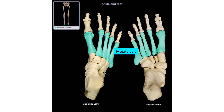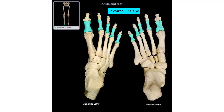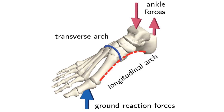The metatarsals are long bones with no special features, similar to the metacarpals of the hand. There are proximal, middle, and distal phalanges, and as in the hand, the big toe has only two phalanges — proximal and distal — while the other toes have three.